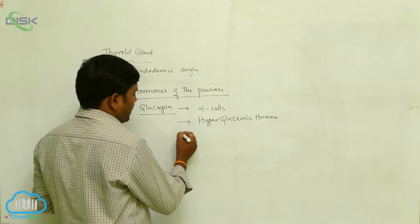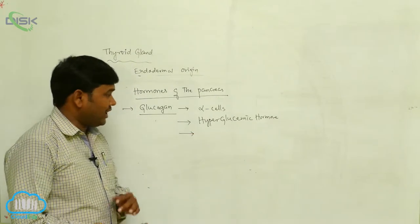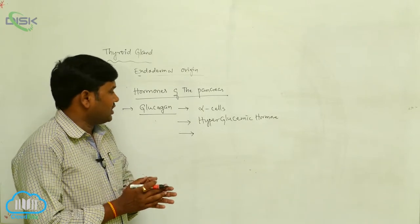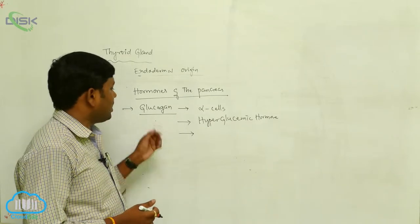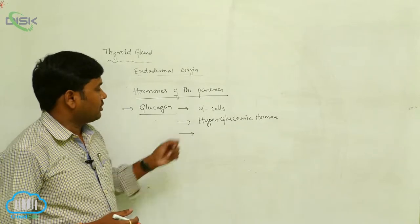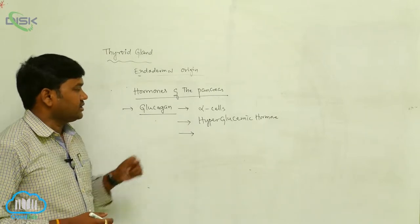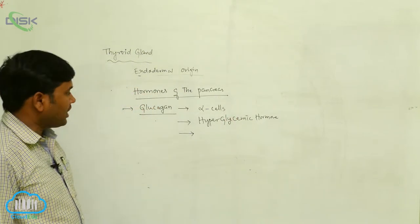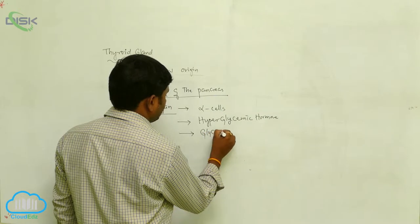Why is it called the hyperglycemic hormone? When there is an absence or reduction of glucose levels in the blood, then glucagon participates to increase the sugar levels or glucose levels in the body. That is why it is called the hyperglycemic hormone.